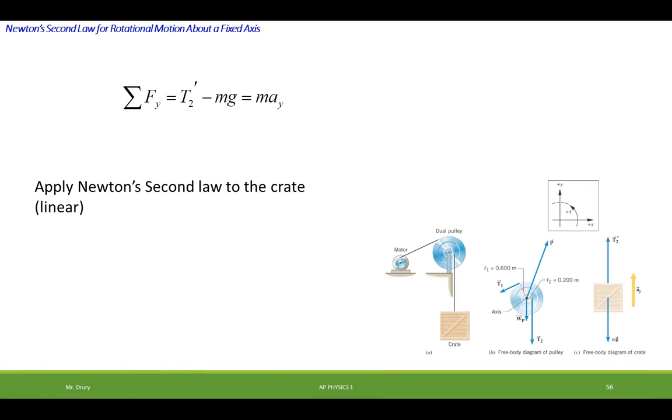Alright, now let's apply Newton's second law to the crate. Now where do we get this? This is our linear equation. We have this acting up minus this acting down equals the linear acceleration.